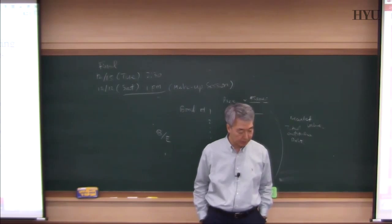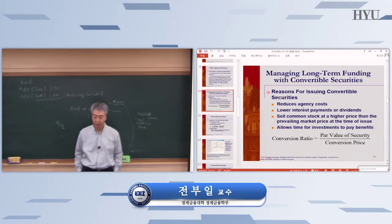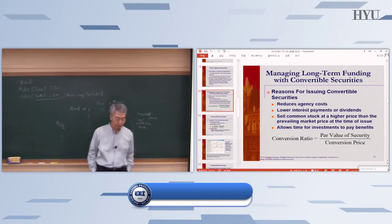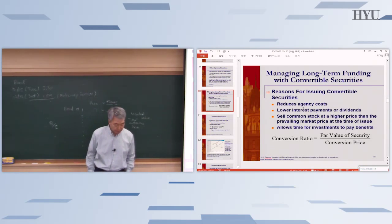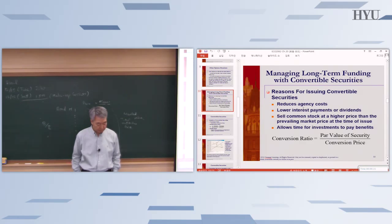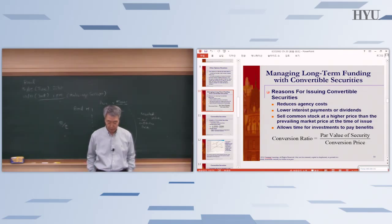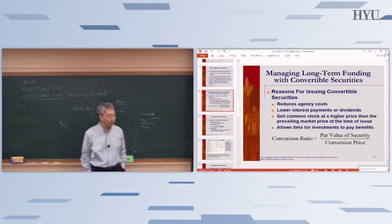We talked about call option valuation, how to value it, and what factors affect the value of a call option. So let's talk about some other similar derivatives. The first one today is convertible security — for example, convertible bond or convertible preferred stock.